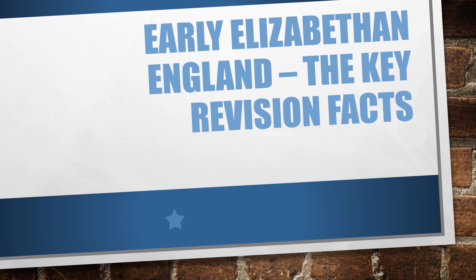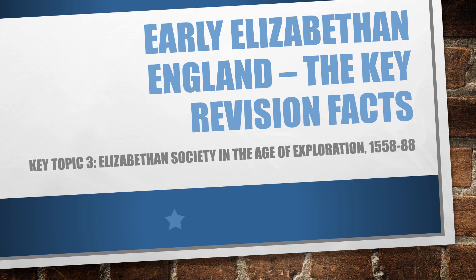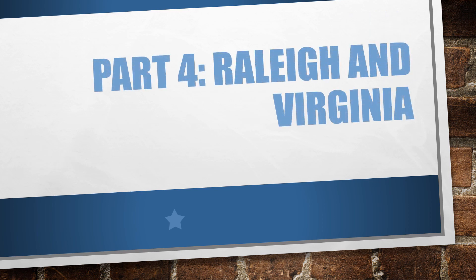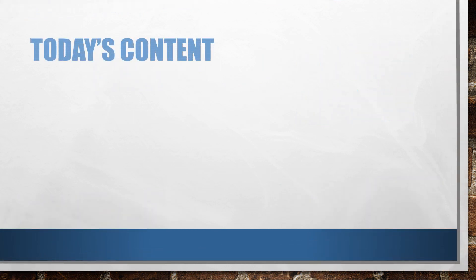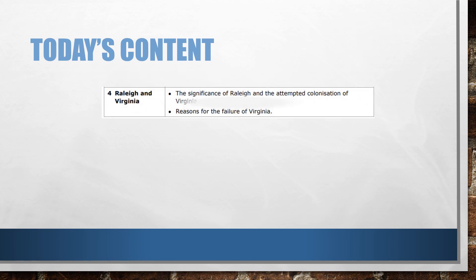Welcome back to this early Elizabethan England revision series. Today we're focusing on key topic three: Elizabethan society in the age of exploration between 1558 and 1588. Our key content today will focus on part four, which is Raleigh and the colonization of Virginia. We'll look at the significance of Raleigh, the attempted colonization of Virginia, its reasons for failure, and a couple of exam questions that could come up in the 2023 examination series.